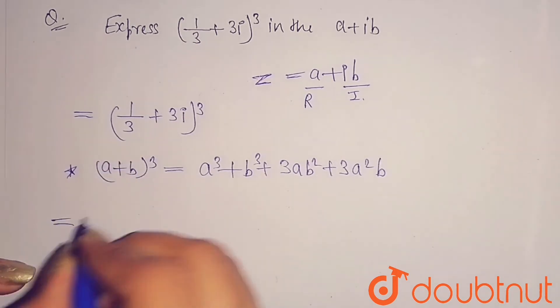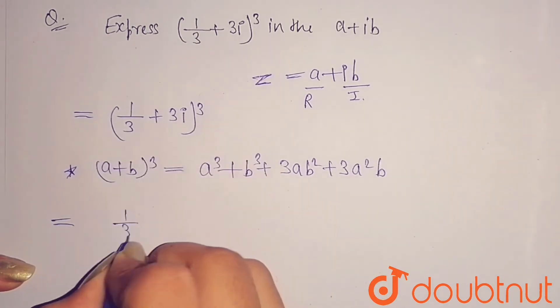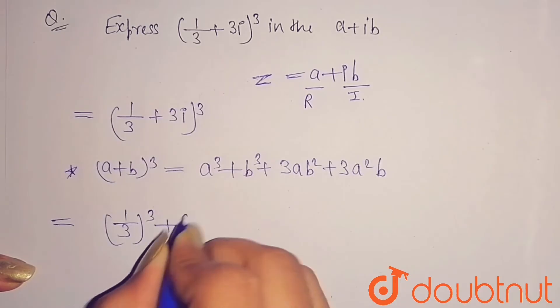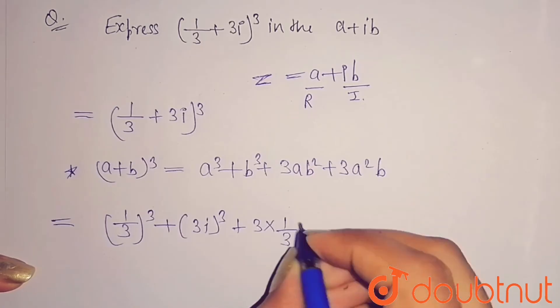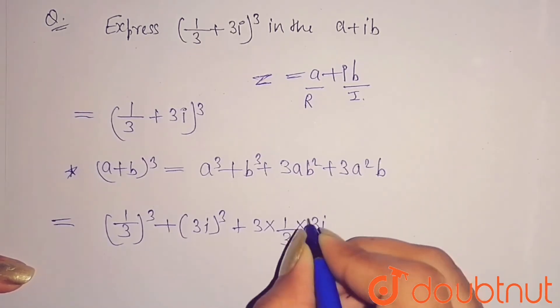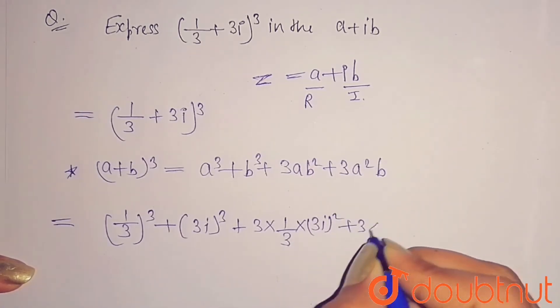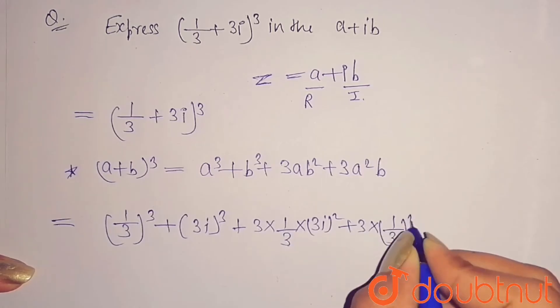So you will get a³, it means (1/3)³ + (3i)³ + 3 × (1/3) × (3i)² + 3 × (1/3)² × 3i.